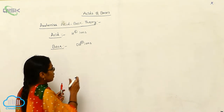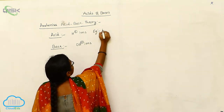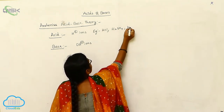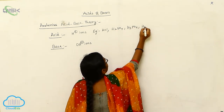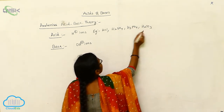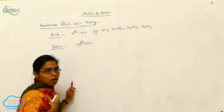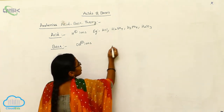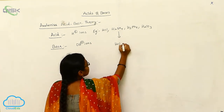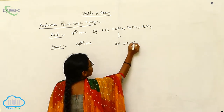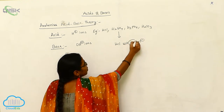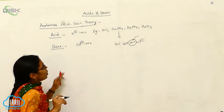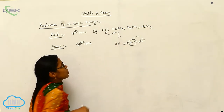Examples of Arrhenius acids are hydrochloric acid, sulfuric acid, phosphoric acid, and carbonic acid. These all give H⁺ ions on dissolving in water. For example, HCl gives H⁺ and Cl⁻. According to the definition, it compulsorily gives H⁺ ions, so HCl is an Arrhenius acid.